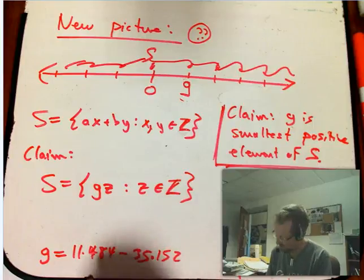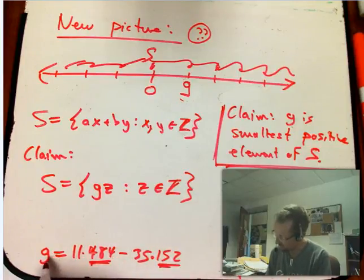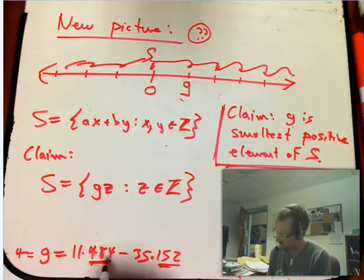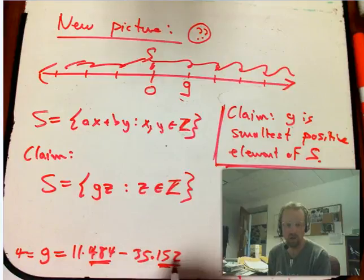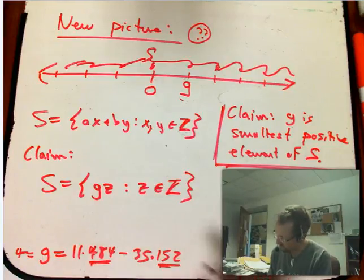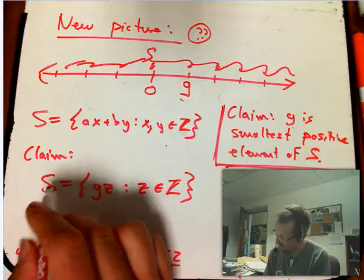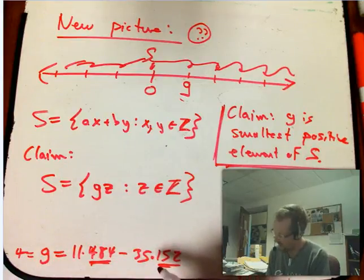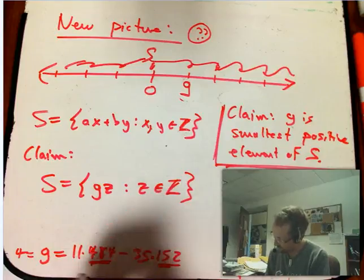But in this example, at any rate, we're seeing that the GCD, in this case was 4, was a combination of 484 and 152. Now, suppose I take any, and we know that anything in S is definitely divisible by this guy. And I claim that any time I take a multiple of this guy, it'll be divisible.